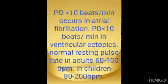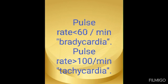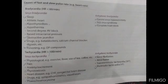Pulse deficit of more than 10 beats per minute occurs in atrial fibrillation, and less than 10 beats per minute in ventricular ectopics, though this is not a hard and fast rule. The normal resting pulse rate is 60 to 100 beats per minute in adults, and 80 to 200 beats per minute in children. Less than 60 is bradycardia; more than 100 is tachycardia.